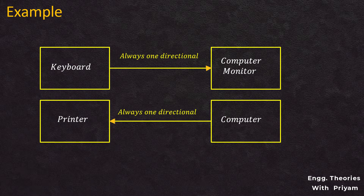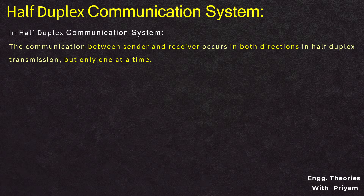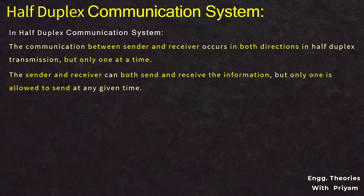In the half duplex communication system, communication between sender and receiver occurs in both directions — either from sender to receiver or receiver to sender — but only one at a time. Both sender and receiver can send and receive information, but only one is allowed to send while the other receives at any given time.